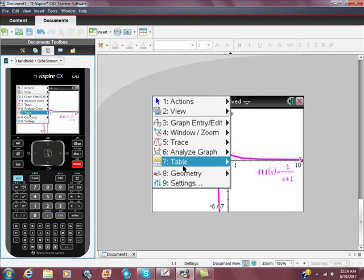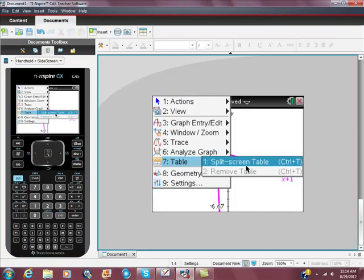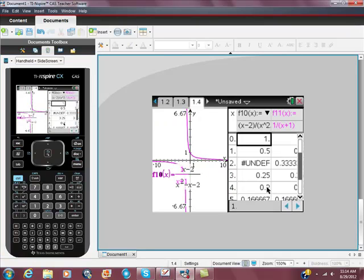But if you look at this differently, if we go to here, we go to menu, we go to table, and we split this screen, we can see on the first one, it shows that before we remove the discontinuity, it shows that it's undefined here. But after we removed it, we see that in fact our limit is one third.